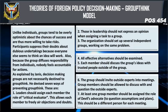As explained by Janis, decision-making groups are not necessarily destined to groupthink. He identifies seven ways of preventing it. Leaders should assign each member the role of critical evaluator, allowing them to freely air objections and doubts. Those in leadership should not express an opinion when assigning tasks to a group. The organization should set up several independent groups working on the same problem, and all effective alternatives should be examined.